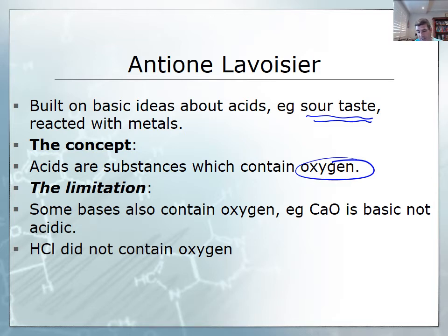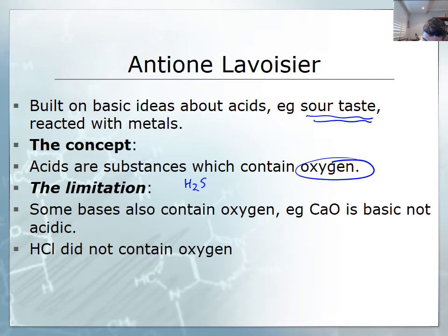We have a sense of this when we looked at acidic oxides: carbon dioxide, sulfur dioxide, and oxides of nitrogen — these do actually form acidic substances. Substances like sulfuric acid, nitric acid, and carbonic acid all contain oxygen. They're all acidic oxides, and therefore all the acids formed from acidic oxides contain oxygen, so this was a reasonable attempt at a definition of acids.